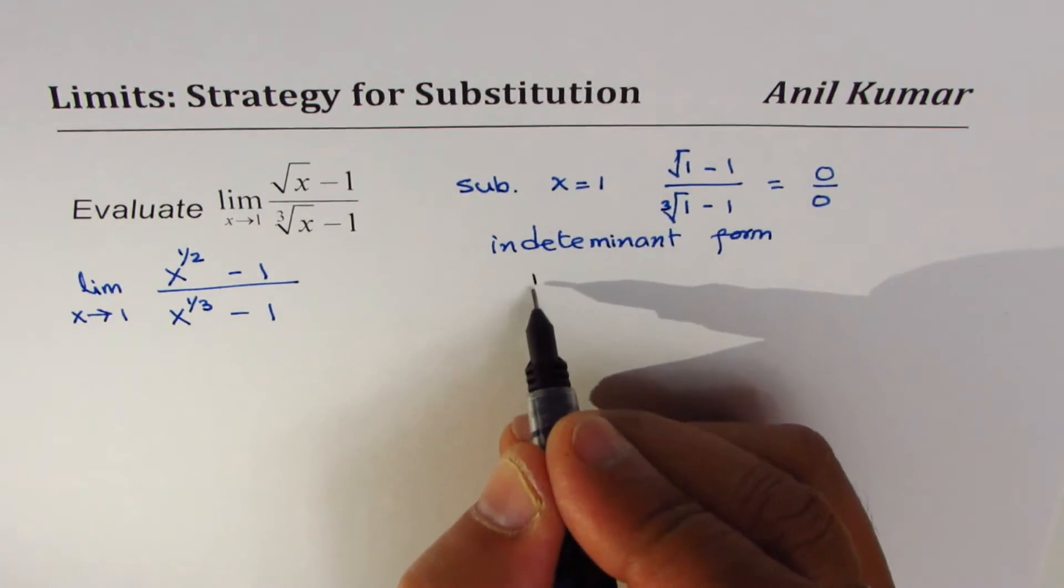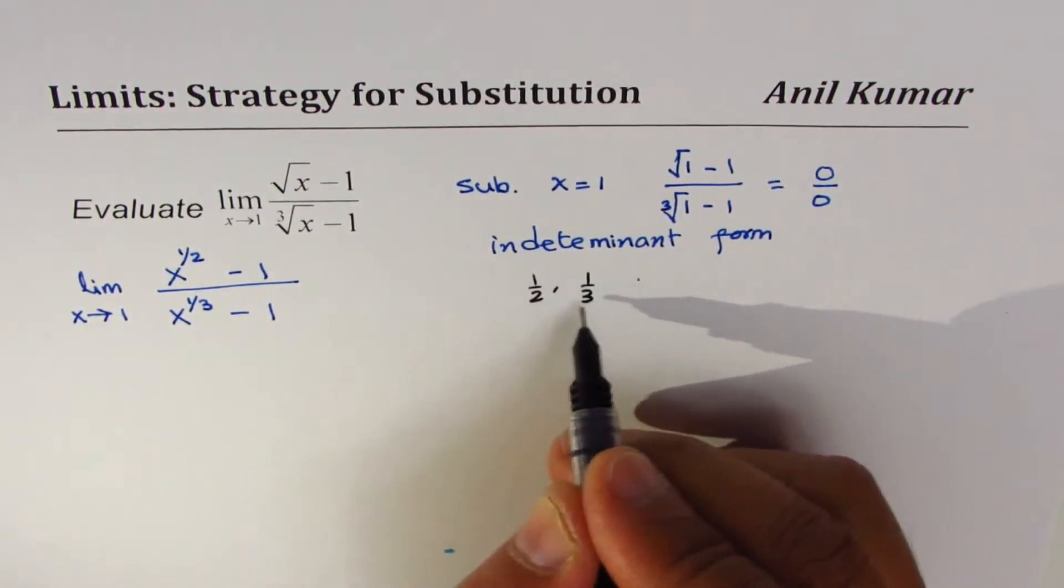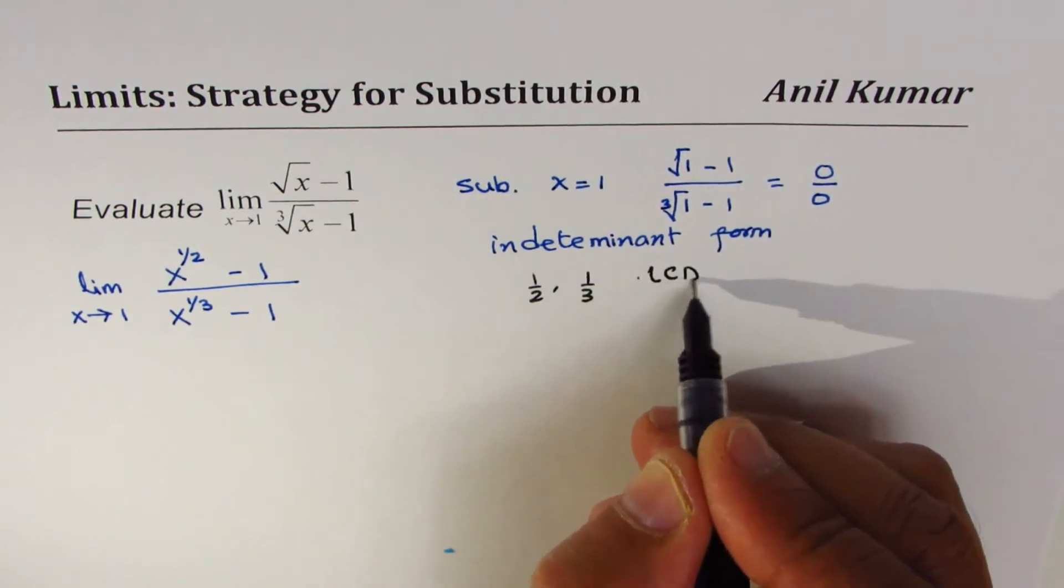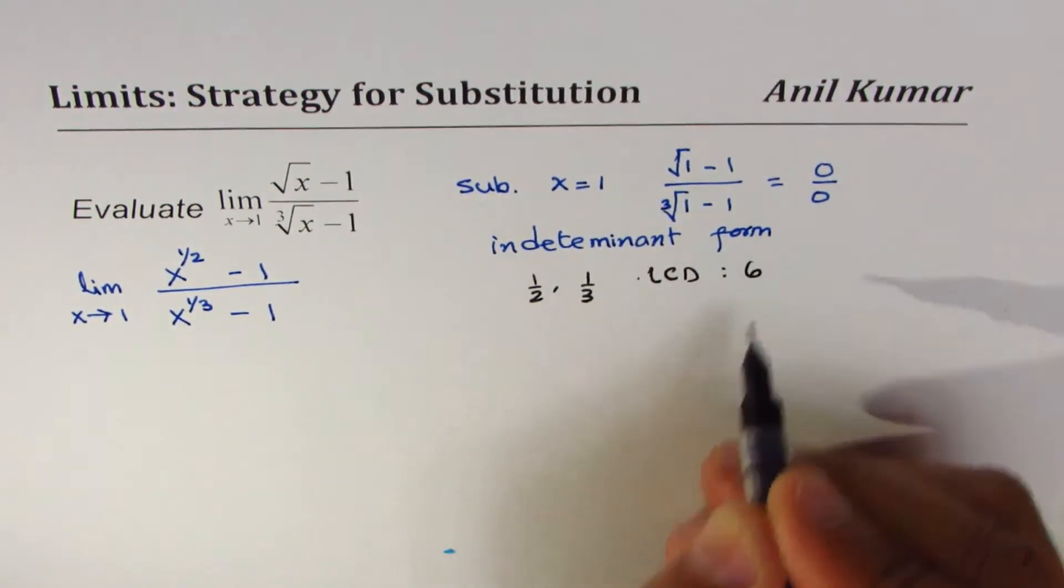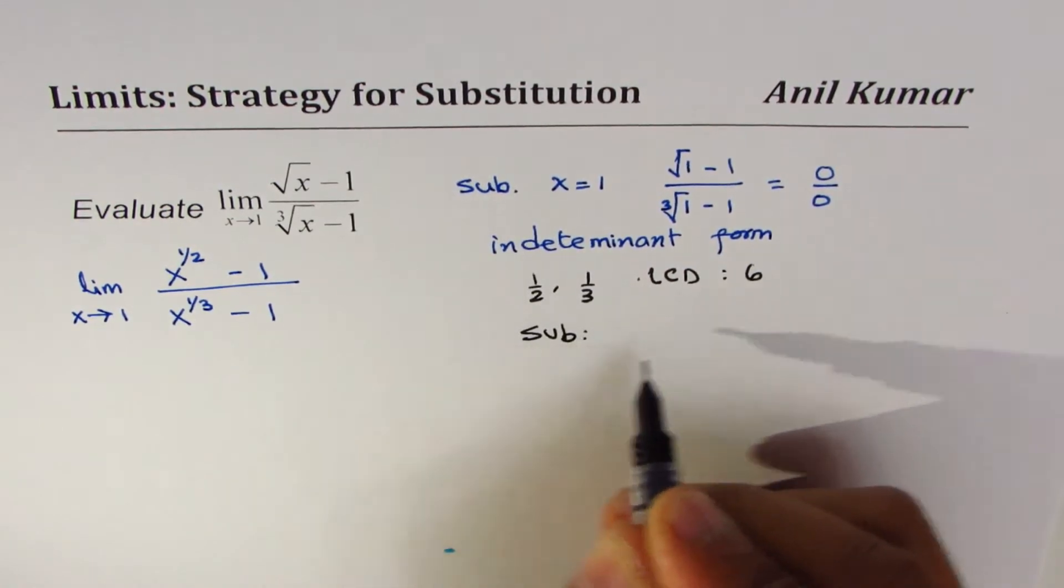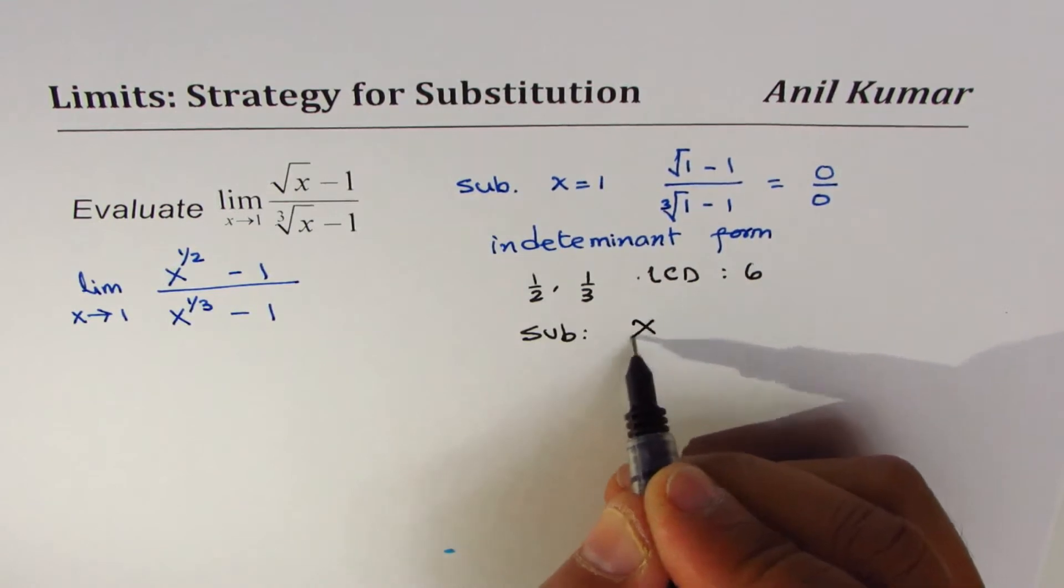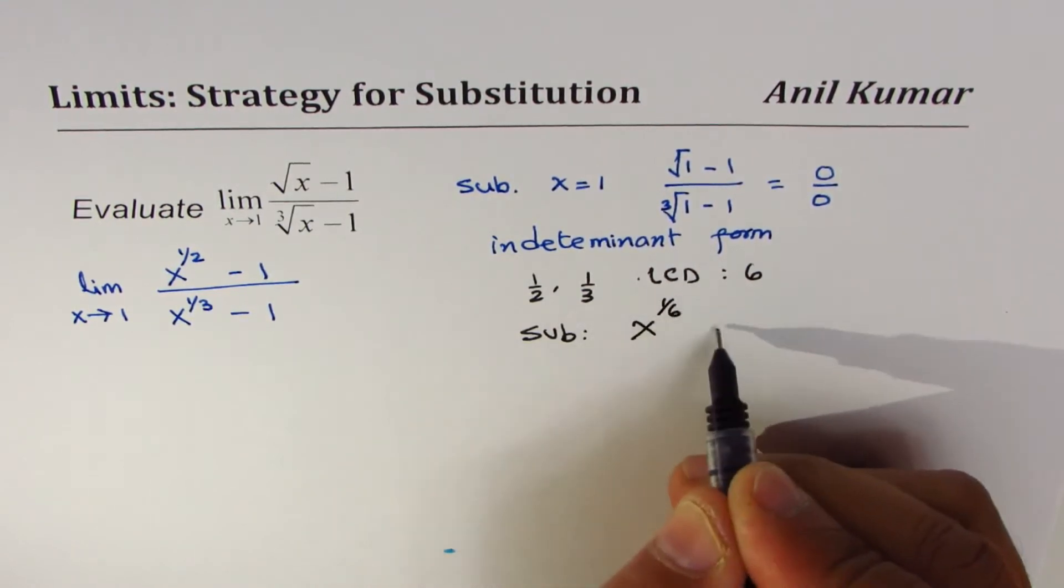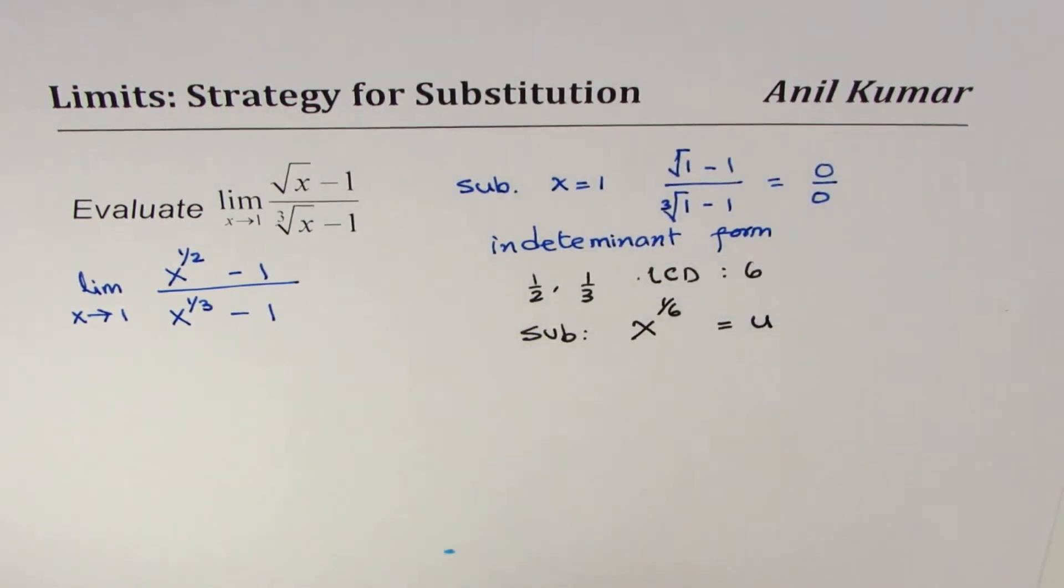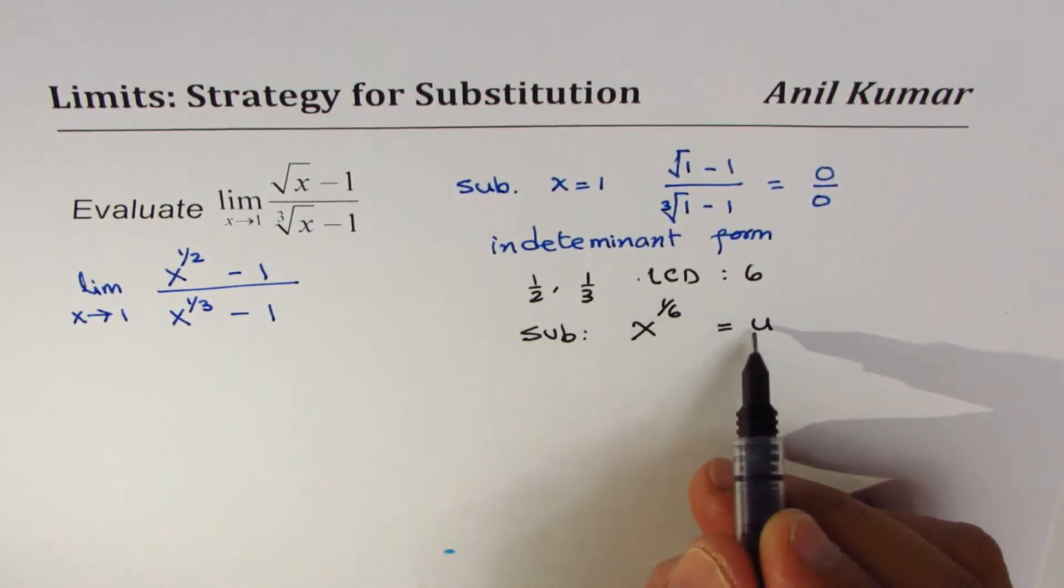Now to find what we should substitute, think about it like this: 1 over 2 and 1 over 3. What is the lowest common denominator? The lowest common denominator is 6, so the substitution which we should make should be x to the power of 1 over 6. Let that be equal to u.